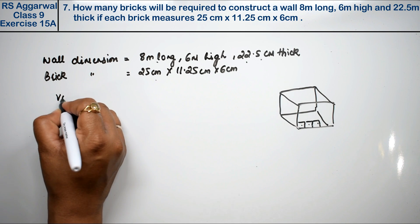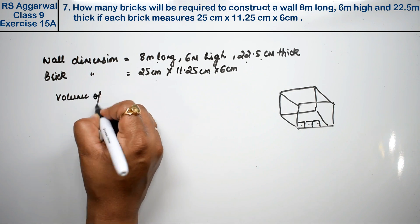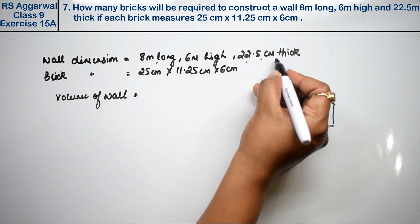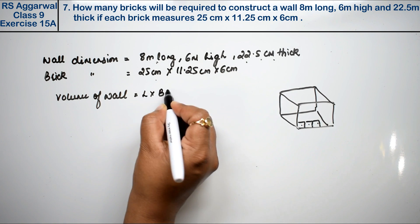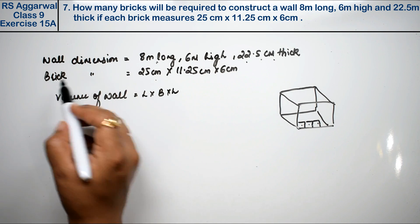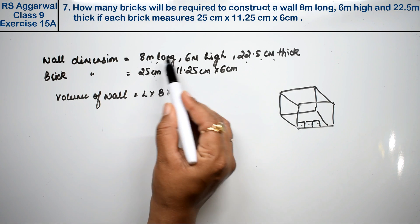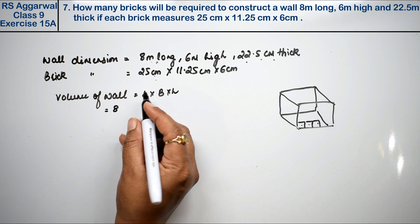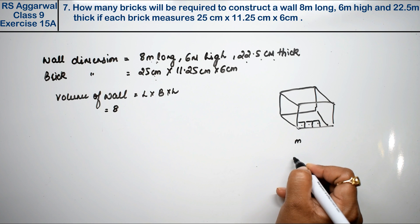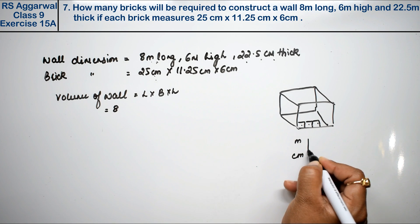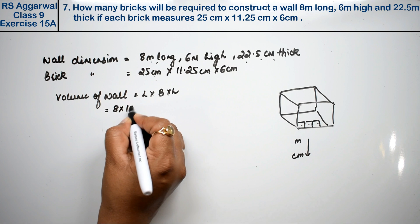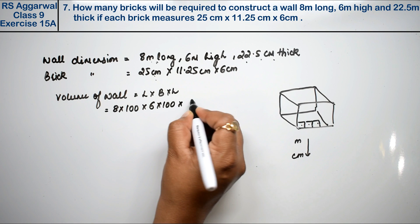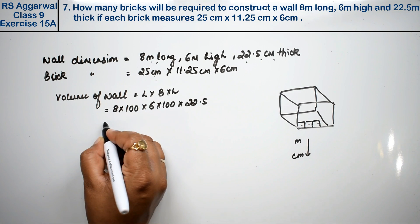Now we will take the volume of the wall. Volume equals length into breadth into height. Since the brick dimensions are given in centimetres, it will be good to convert the wall dimensions into centimetres as well. So 8 meters becomes 800 cm, and 6 meters becomes 600 cm. 22.5 is already in centimetres.